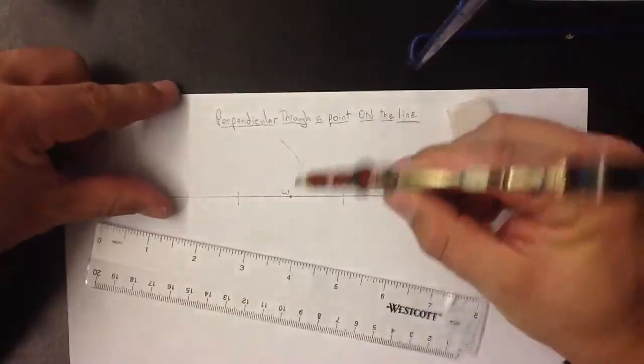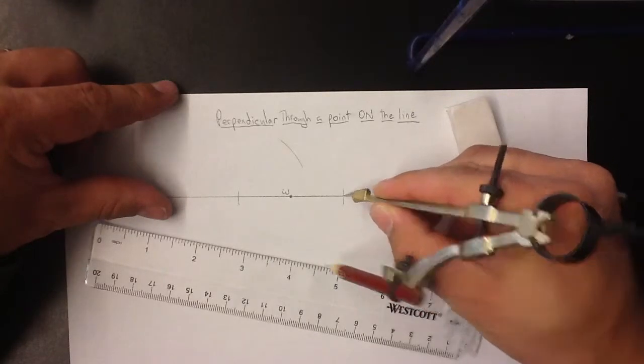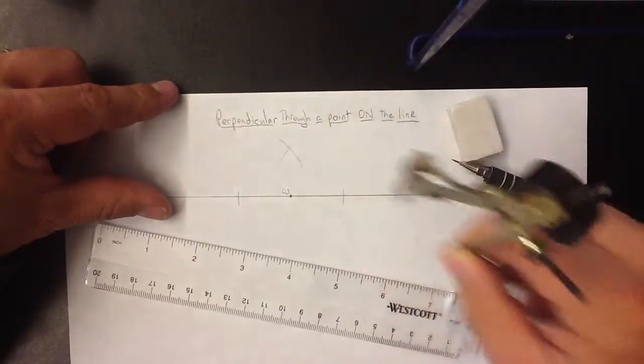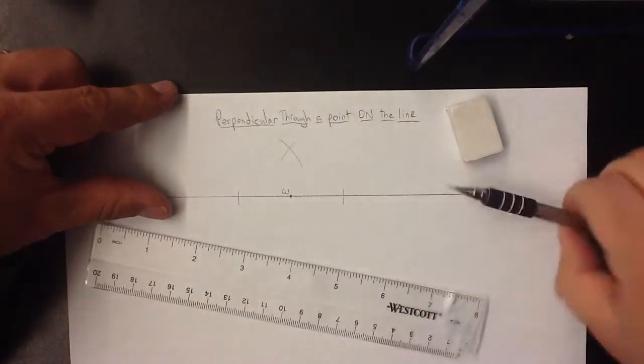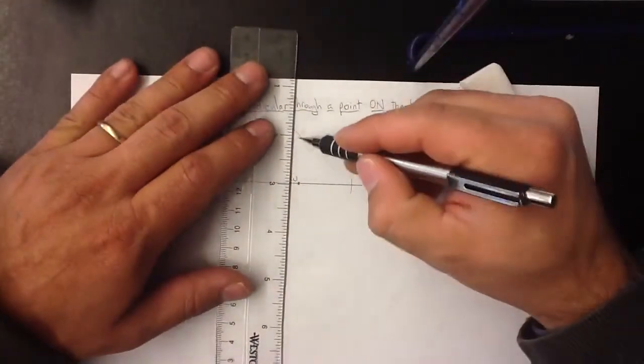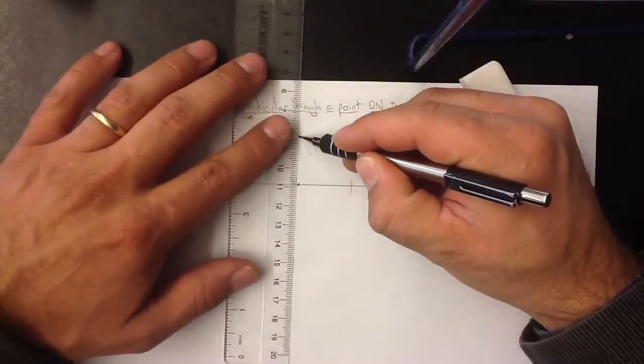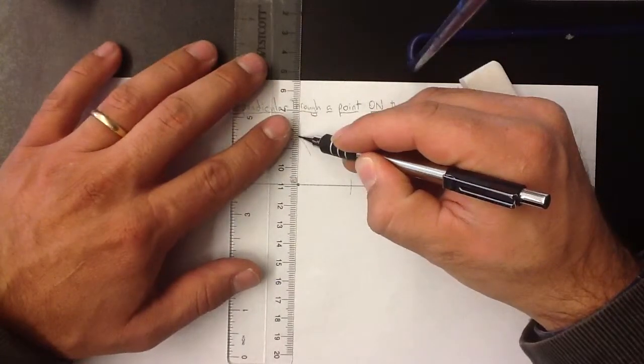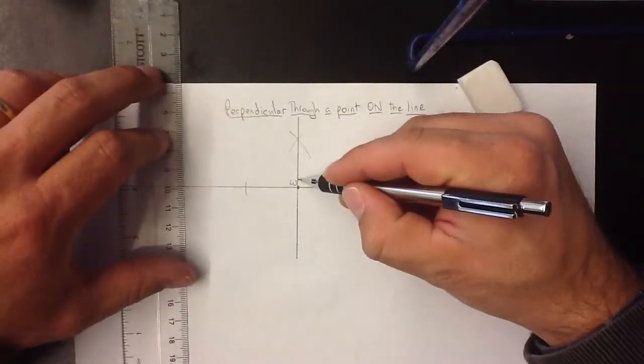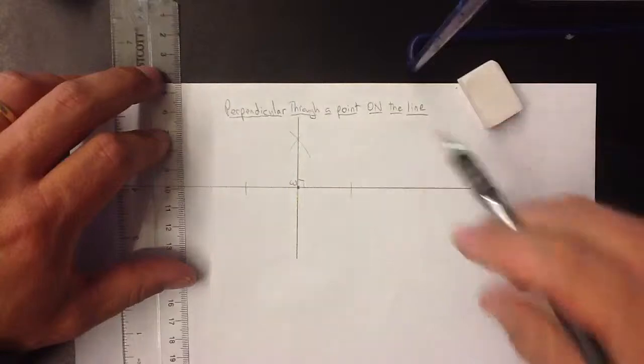And then from the other arc on the line, this one, I'm going to cross that arc that I just drew. At that intersection point is where I will connect through W to make a perpendicular line through a point on the line.